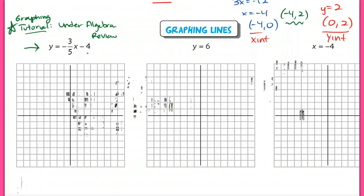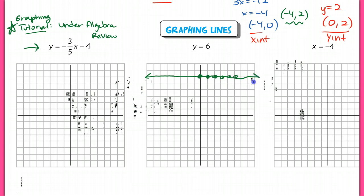I'm going to focus on graphing y = 6 and x = negative 4. For y = 6, if I graph every point where y equals 6, I count up to 6 and make a point — and y equals 6 here too, and here, and here, going on forever. So the line y = 6 is a horizontal line. You go to where the y-value equals that number and draw a horizontal line through it.